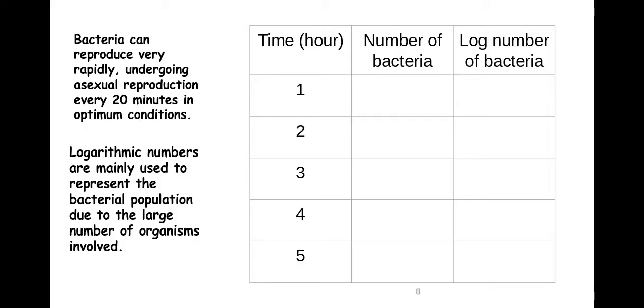Using those smaller log numbers is also easier to plot them on graphs, so I'll demonstrate that for you now. If over the space of an hour I would have 8 bacteria, and then after two hours it'd be 64, then 152, and so on.